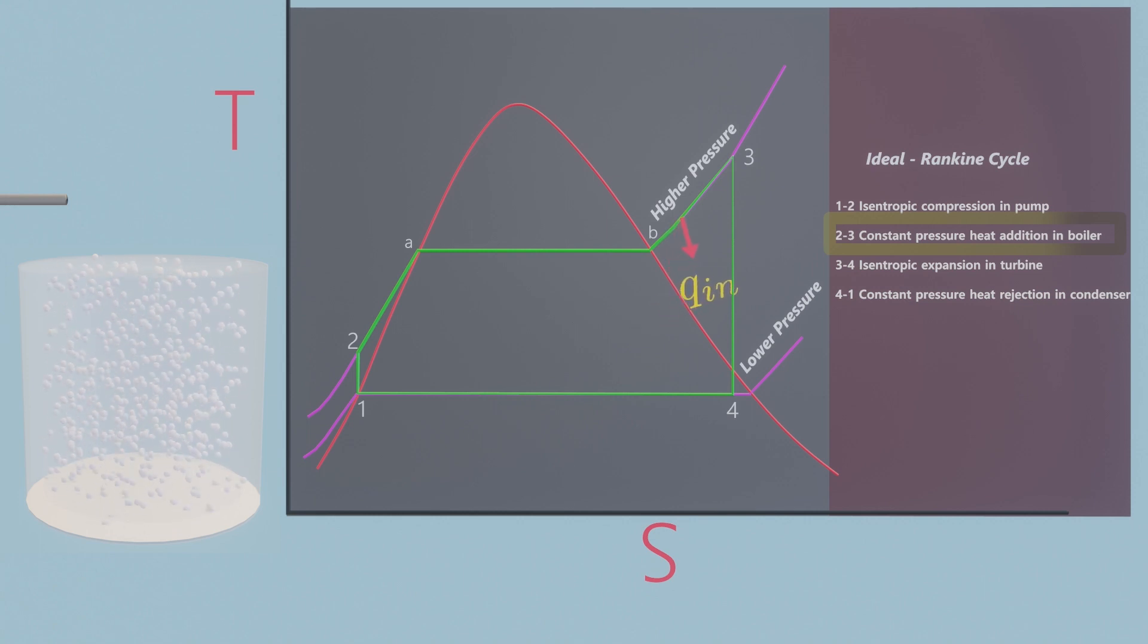Further addition of heat creates steam where temperature increases. Steam at state 3 is superheated vapor. Notice that heat is added to water at state 2 until it reaches state 3. Steam at state 3 has high energy, which can be used to generate mechanical or electrical work. This high energy is utilized when pressure and temperature drops to state 4.